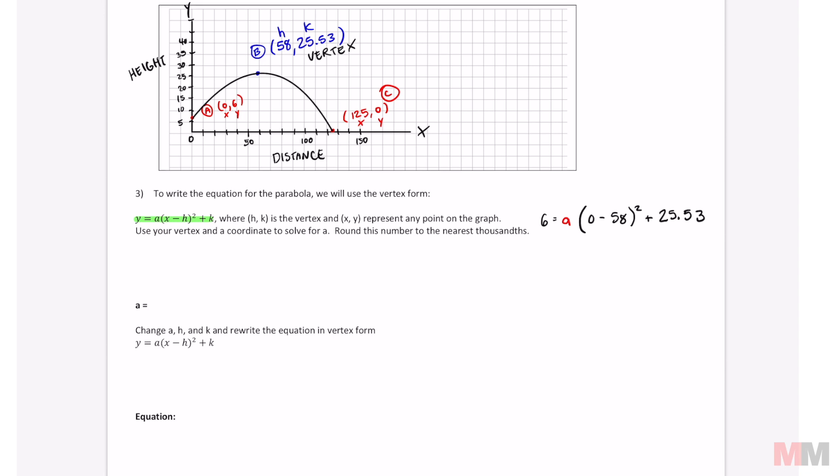Guess what our goal is? From this point, solve for A. And if you don't know what to do with this equation to solve for A, think about PEMDAS. Parentheses first. 0 minus 58 is negative 58 squared. We got to do exponents. Negative 58 squared is going to equal 3,364. Then from there, we got to solve for A. It's just a two-step equation. Subtract 25.53 on both sides. Negative 19.53 equals A times 3,364. And the final step is just to divide by 3,364 on both sides. A lot of work. At the end, we get negative 0.006 rounded. That is the value of A.